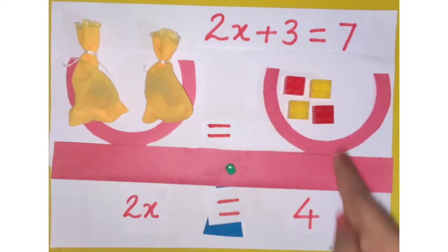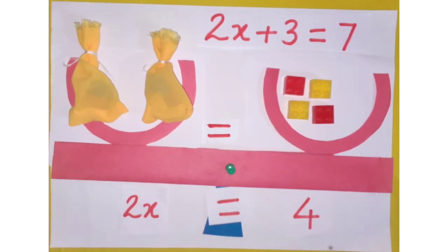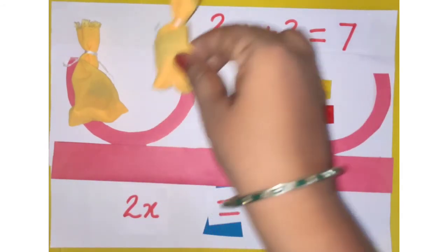So 2x equals 4. What I need now on the left-hand side is just the value of x, so this multiplication by 2 has to be removed, which means we divide by 2 on both sides. When 2x is divided by 2, we get x. Dividing by 2 means only half the quantity remains, so we have 1 bag remaining on the left-hand side.